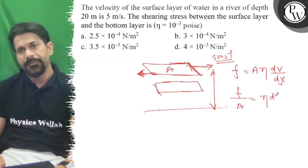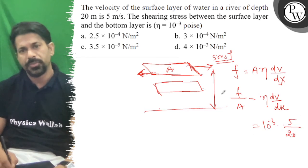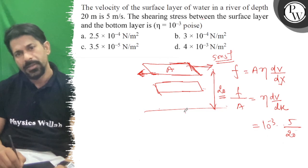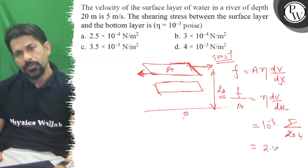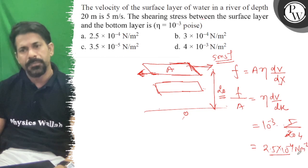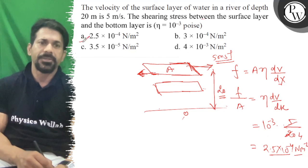So, this is equal to eta dv by dx. So, eta is 10 to the power minus 3. Velocity is 5 and divided by 20 because its total depth is 20, and that velocity is zero at the bottom. So this is equal to 2.5 times 10 to the power minus 4 Newton per meter square. That means option A is correct. All the best.